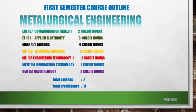Now for the first semester course outline — if you want to apply for Metallurgical Engineering, this is what you must have in mind. You're going to do seven courses: Communication Skills (2 credit hours), Applied Electricity (3 credit hours), Algebra (4 credit hours), and Technical Drawing (2 credit hours).